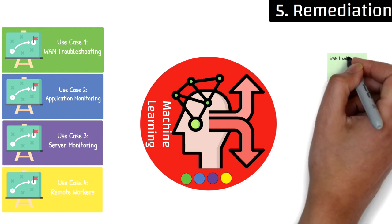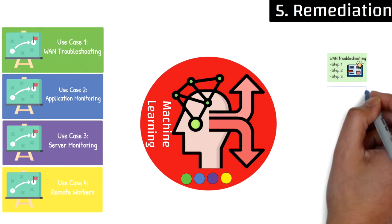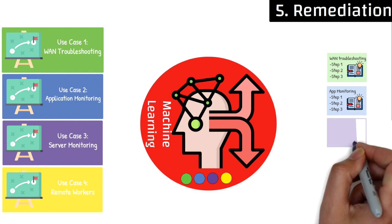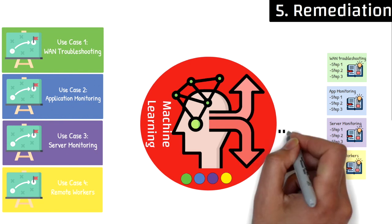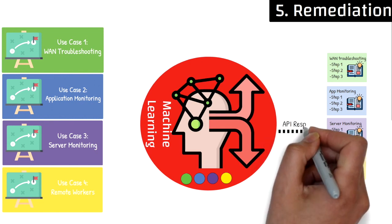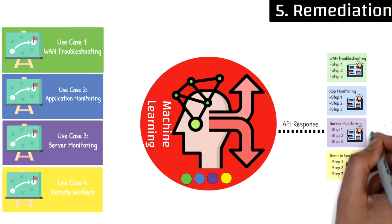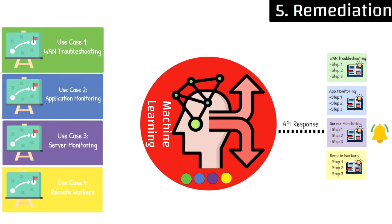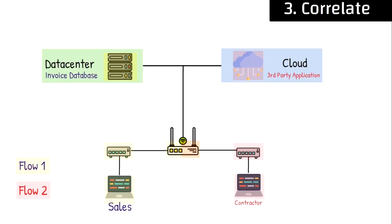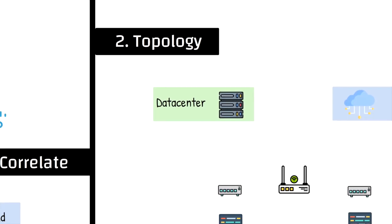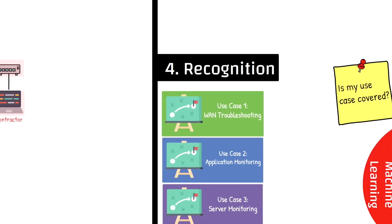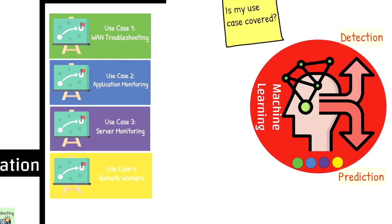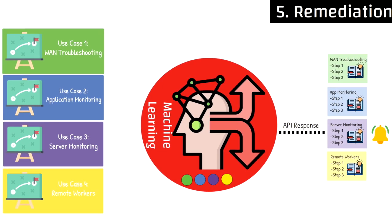Based on the decision or prediction made in the previous step, the last phase is to actually do something with that information. This is where the remediation phase either makes a recommendation based on the situation or automates a response to an external system. While it's unlikely that most customers will opt for full automation in the beginning, a more likely scenario is that a trigger alerts the network teams on its findings for a human to make the final decision. AIOps is not a set-it-and-forget-it model — it relies heavily on learning and improving over time. This means there will be potential for more false positives in the beginning, and hopefully more accurate decisions and predictions over time as the system learns.